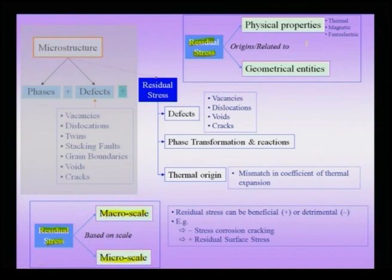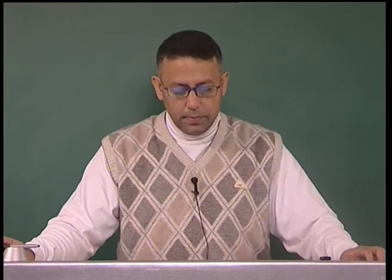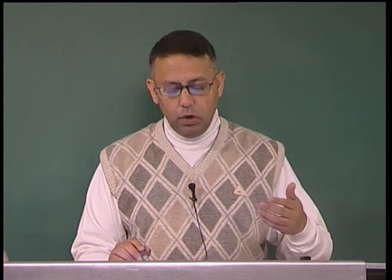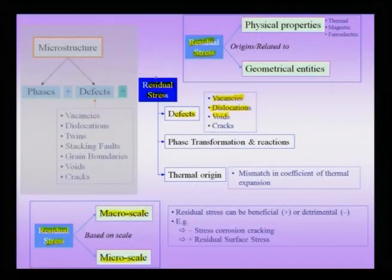We need to classify residual stresses because there are multiple origins: some can be at very small nanometer length scales, some at the length scale of the entire component. Some are related to processes occurring in the material like phase transformations and reactions, while others are related to differential thermal cooling. Residual stresses can arise from defects including dislocations, vacancies, interstitials, voids, and cracks. Voids and cracks give rise to residual stresses differently compared to dislocations and vacancies.